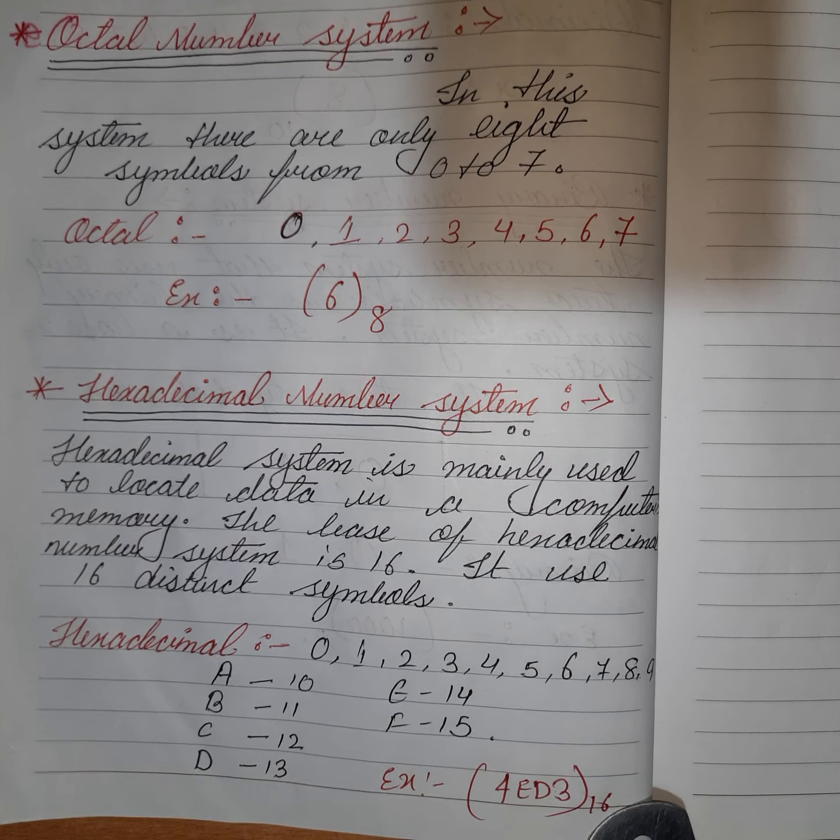Okay students, today we have learned the types of number systems: decimal, binary, octal, and hexadecimal. In the next class, we will learn how to convert binary to decimal and decimal to binary. Thank you.